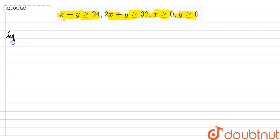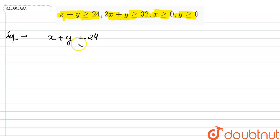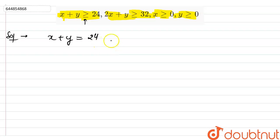Okay, so this is a simple question and I'm going to solve it. First of all, I'm writing x plus y equals to 24. I'm solving the equations by assuming that these are equalities. Otherwise, I'm going to make the graph using the inequality. For the solving purpose, I'm doing this. So I'm going to find some coordinates so that I can make a graph.